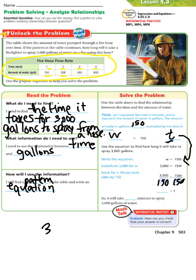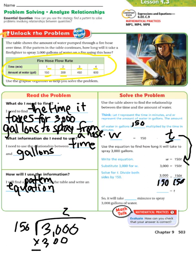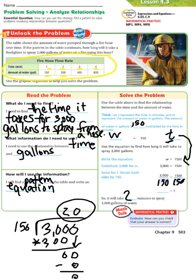Do 3,000 divided by 150. 150 goes into 300 two times; 150 times 2 is 300. Subtract to get zero, then bring down the zero. 150 goes into zero, zero times. So the answer is it will take 20 minutes to spray 3,000 gallons of water.